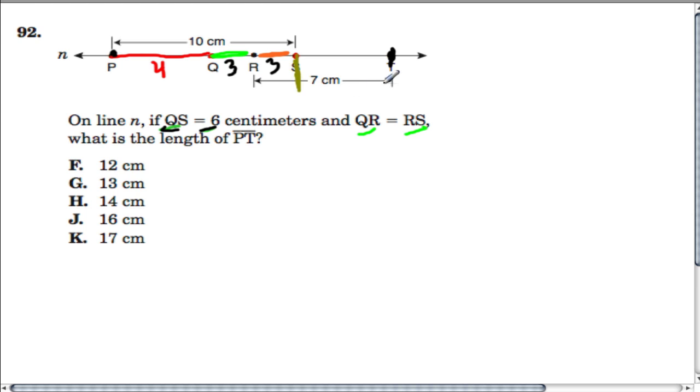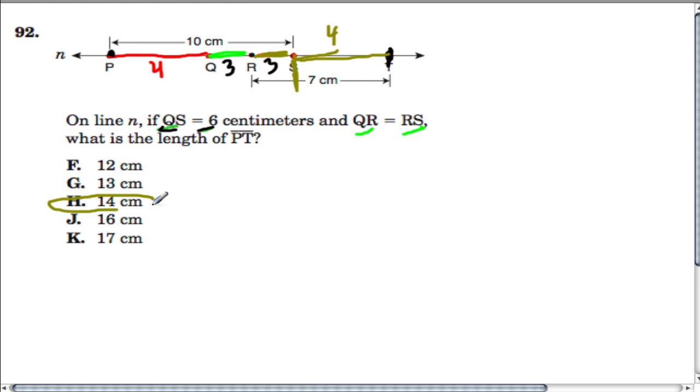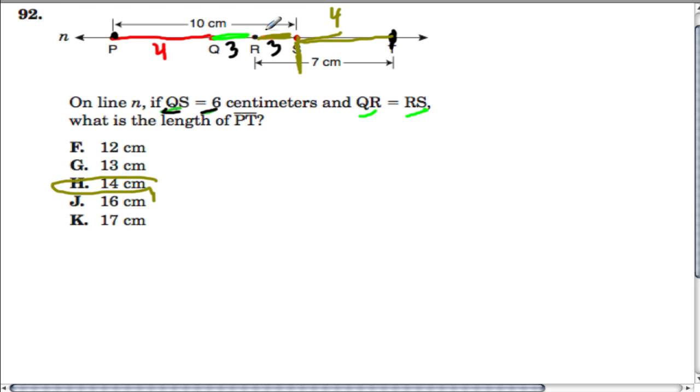...but RS is 3 of those centimeters. So this, from S to T right here, if the whole thing was 7 and this little chunk right here is 3, that must be 4. And altogether it's 14 centimeters, the 10 centimeters here and the 4 in the next section.